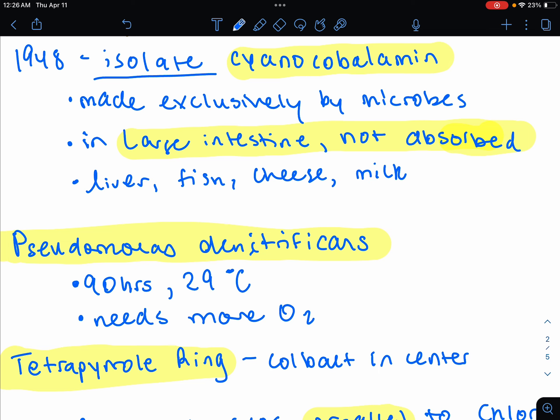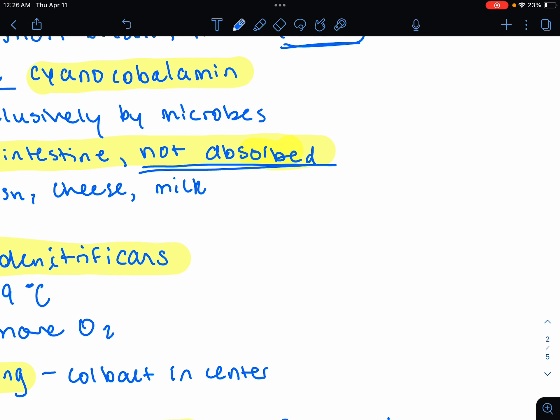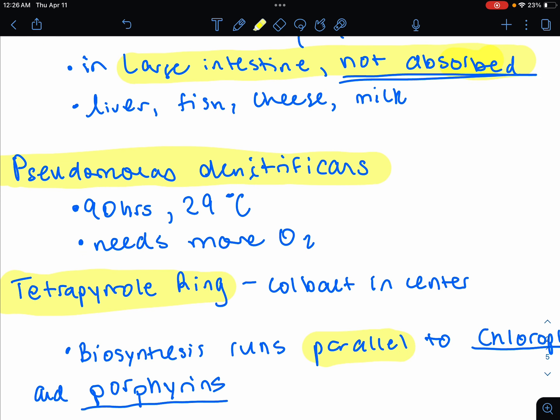B12 is synthesized exclusively by microbes in nature. And the kicker is it's made by the large intestine's bacteria. However, we can't be absorbing it for some reason. We just can't absorb it. It's being made by the bacteria in our large intestine. But we need to ingest the B12, not absorb it from those bacteria. So in order to get a lot of B12, you could eat liver, fish, cheese, and milk, as well as beef.